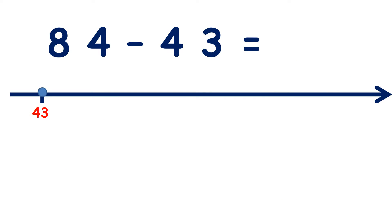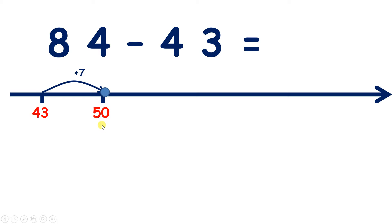But I can answer this question more quickly on a number line. So I start off the same — I need 7 more to get to 50. Now I need to get to 84, so I need 8 tens. I'm on 50, so I have 5 tens. So I need 3 more tens, or 30, to get to 80.